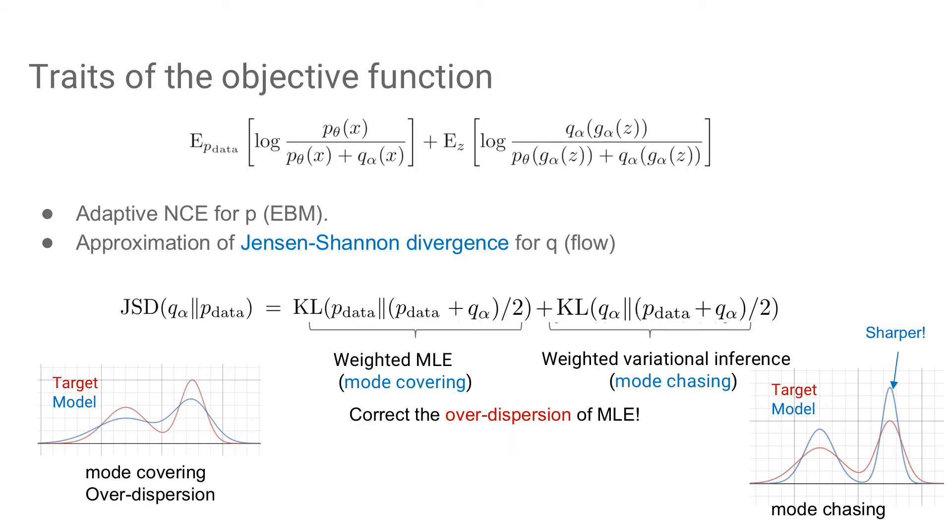Here are two traits of the proposed objective function. First, the update of EBM follows NCE, with the noise distribution adaptively updated. Second, the update of flow is approximately minimizing the Jensen-Shannon divergence, which consists of a weighted MLE and a weighted variational inference, corresponding to mode covering and mode chasing respectively. This helps correct the over-dispersion of MLE.